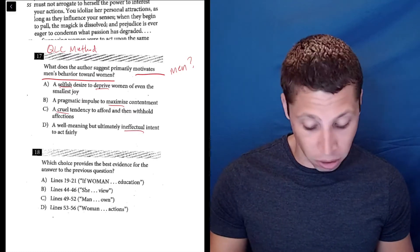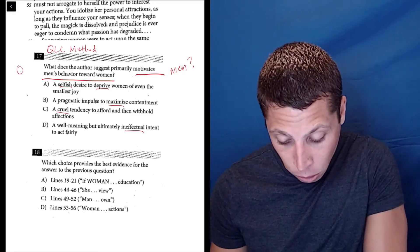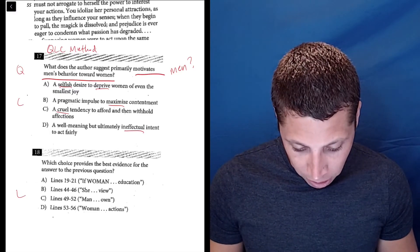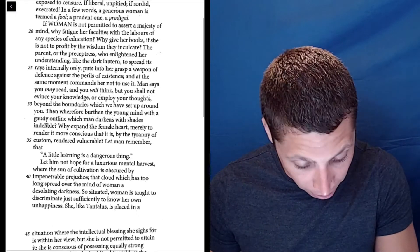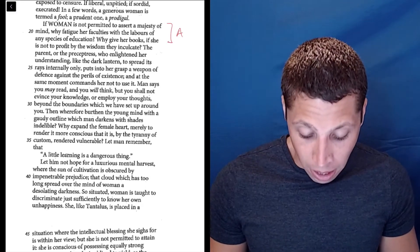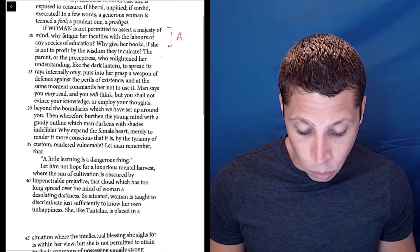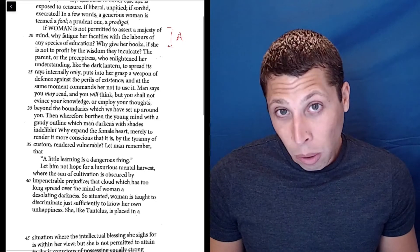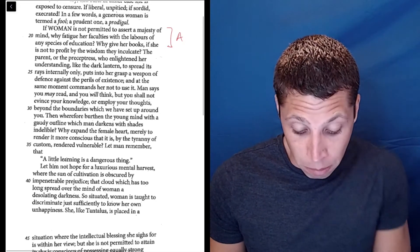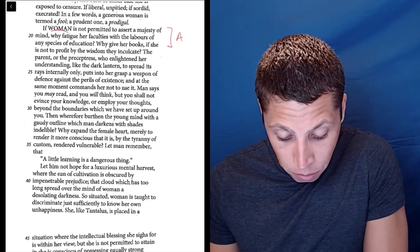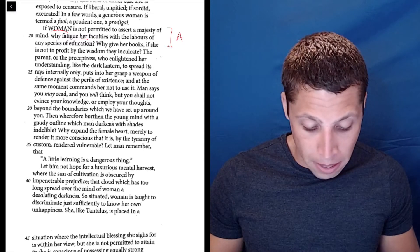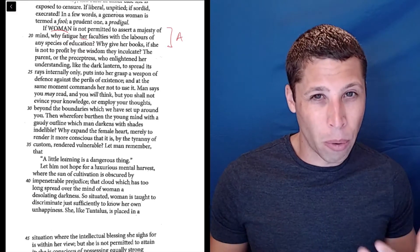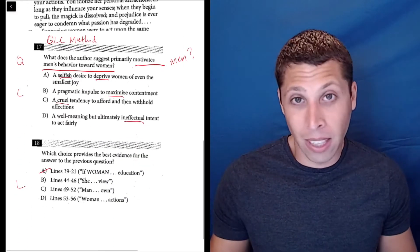Let's look at the answer choices or the line references now in number 18. That's Q, L, C. Let's see if we can get anything out of these. Lines 19 to 21: 'If woman is not permitted to assert a majesty of mind, why fatigue her faculties with the labors of any species of education?' Well, this choice seems to be much more about women. I don't think we're talking about men at all here. It's maybe more about women's motivation. So this line reference seems wrong to me. It's just not on topic.